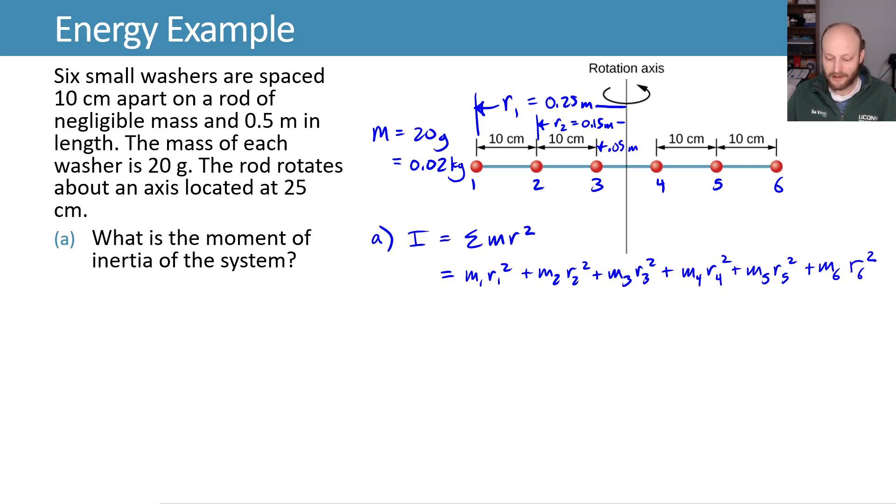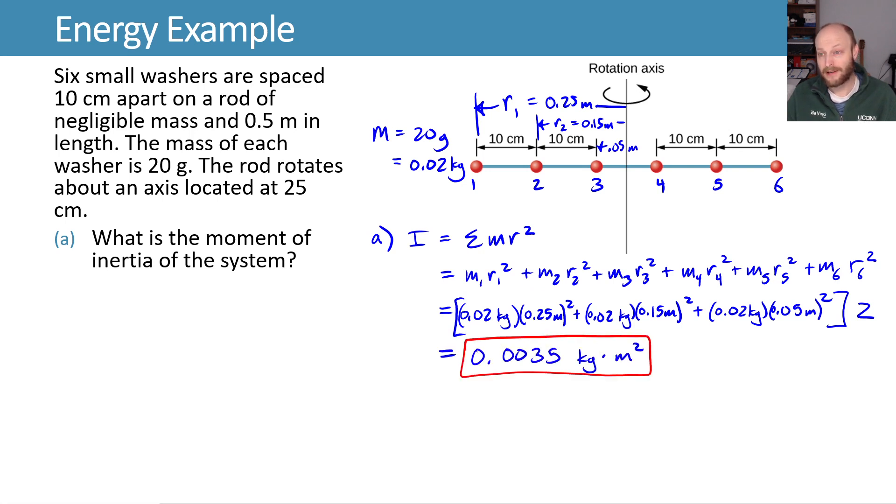In plugging in our values, we can plug them in: this is for mass 1 and its r1, mass 2 and r2 squared, mass 3 r3 squared, and because we're symmetric over here instead of writing all of this out for 4, 5 and 6 I'm going to just group this together and multiply by 2 to save myself a little bit of space and work. We can plug things in and come up with a final answer of 0.0035 kilogram meter squared.